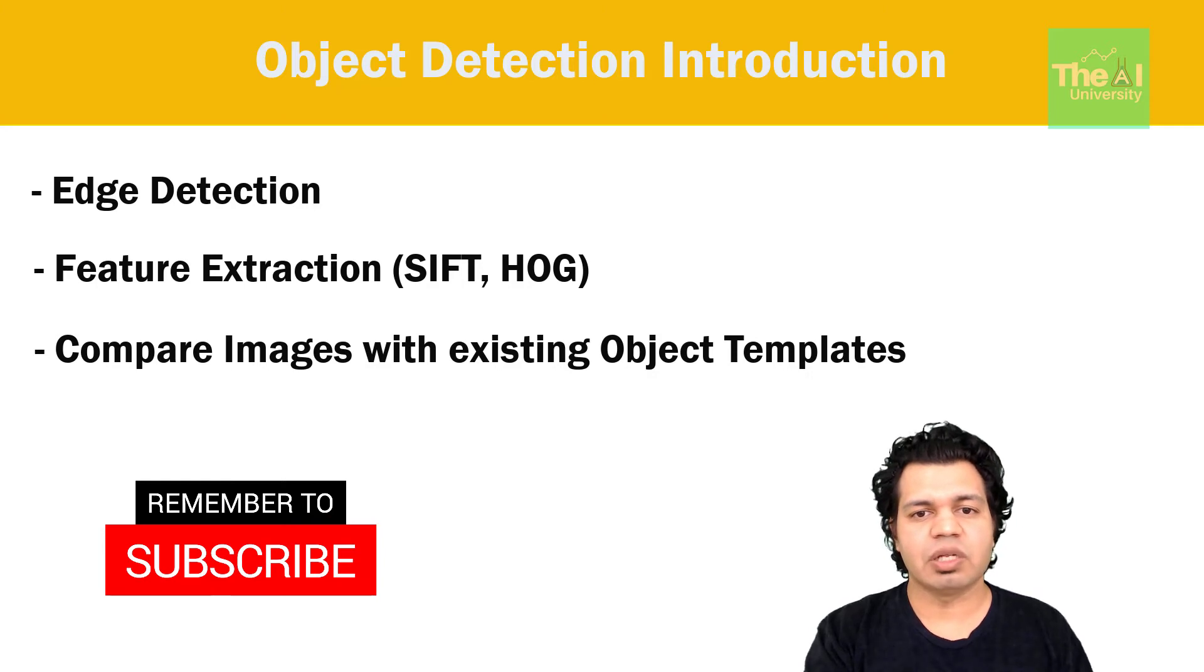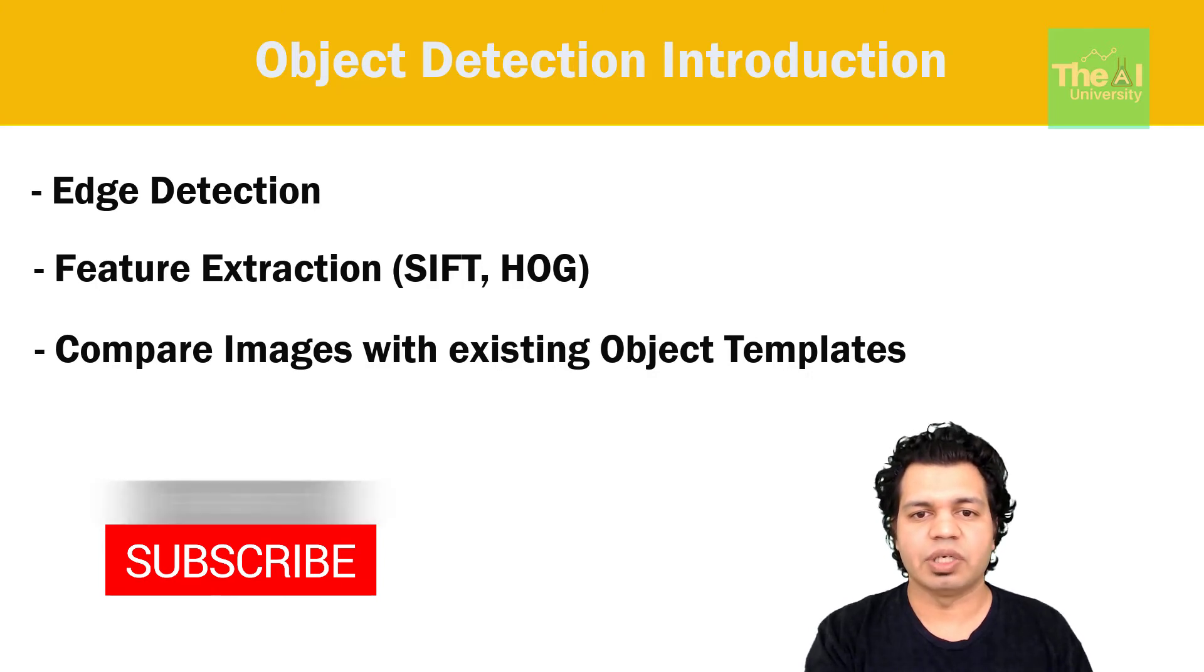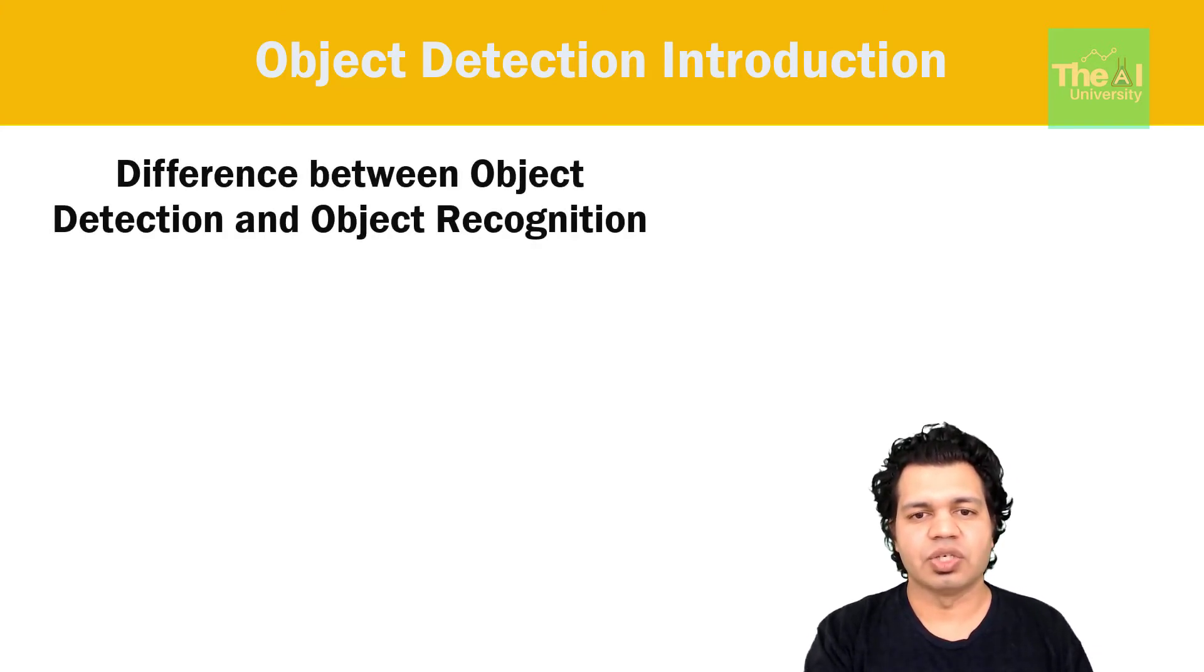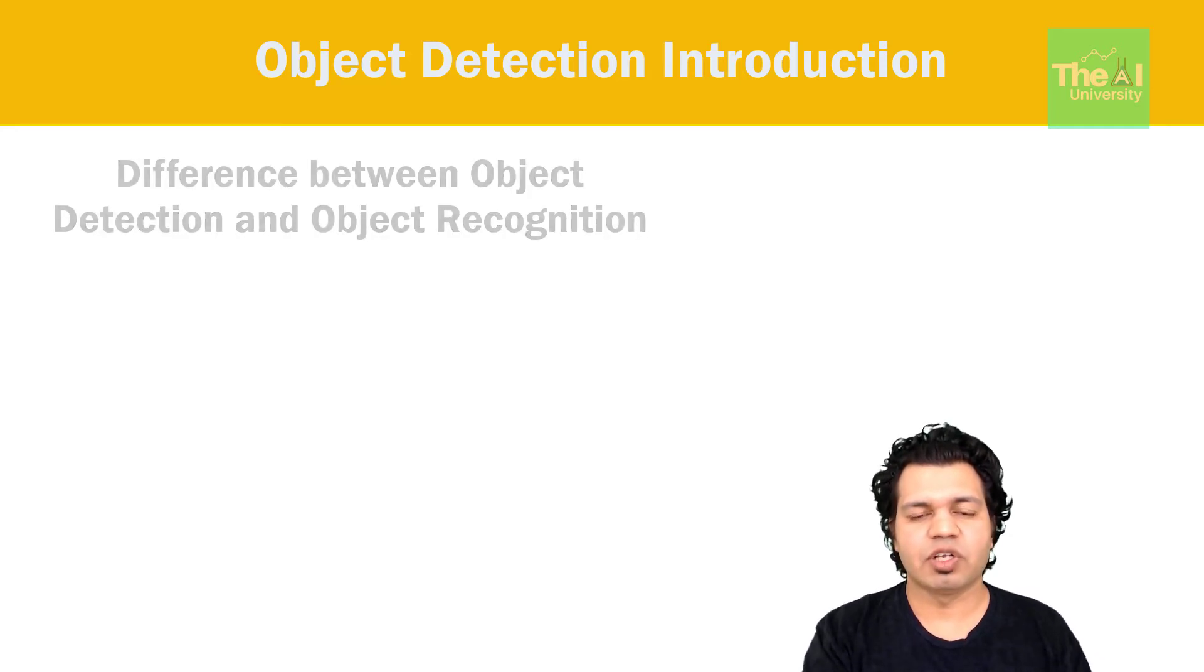While convolutional neural networks are capable of automatically extracting more complex and better features, taking a glance at the conventional methods can at worst be a small detour and at best an inspiration. So what is the difference between object detection and object recognition? Well, object recognition is the technique of identifying the objects present in the images and videos. It is one of the most important applications of machine learning and deep learning where machines try to recognize the content of the image just like humans do. Consider this image where we have an object recognition algorithm which is recognizing the aeroplane and the car quite well.